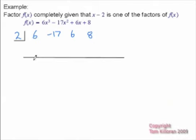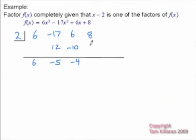We're going to drop down the 6. So 2 times 6 is 12. We'll put the 12 here. Negative 17 plus 12 is negative 5. 2 times negative 5 is negative 10. Plus positive 6 would be negative 4. 2 times negative 4 is negative 8. And when we add those together, we get the answer we were expecting, which is 0.